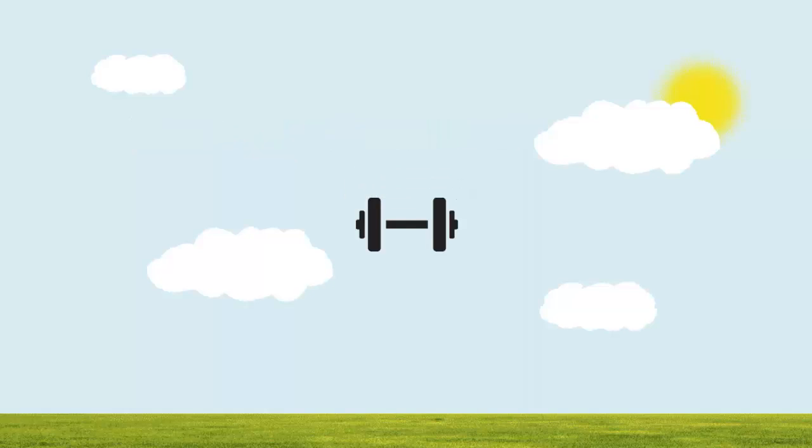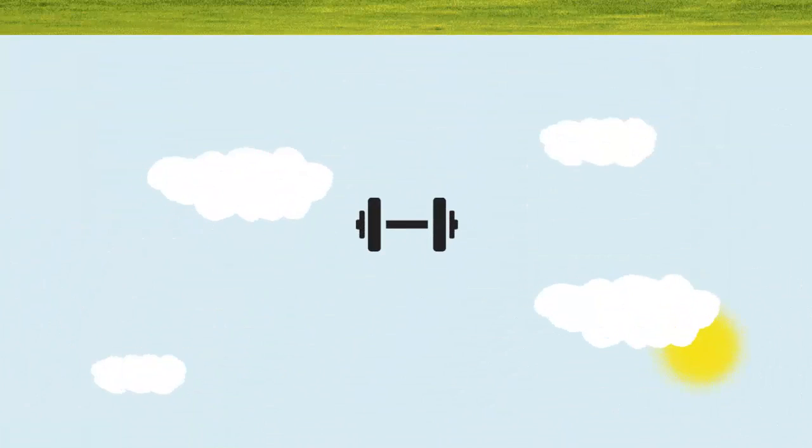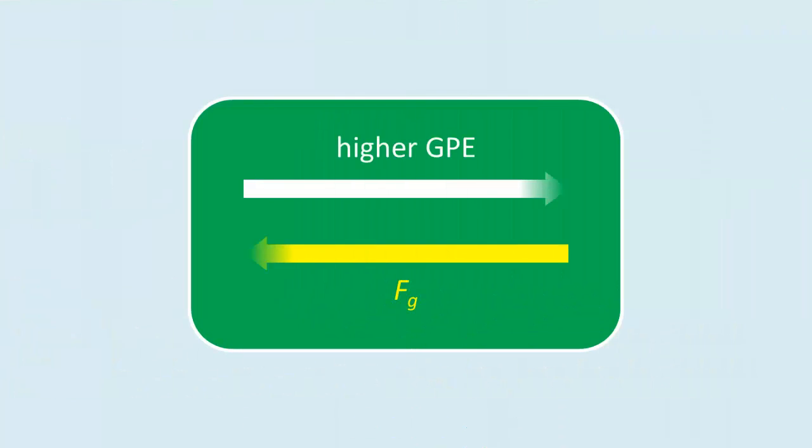Consider a 1kg mass. Because gravitational force acts downward to increase its GPE, we've got to move it upward. If the gravitational force acts upward, we would have to move it downward to increase its GPE. So we have this simple rule that GPE increases in the opposite direction of gravitational force.